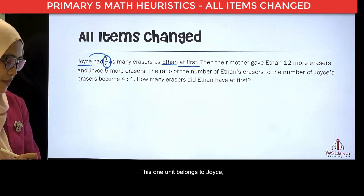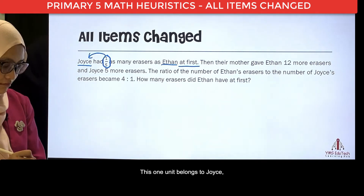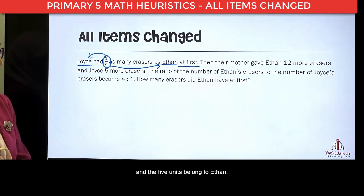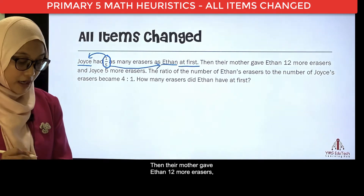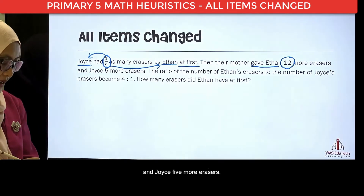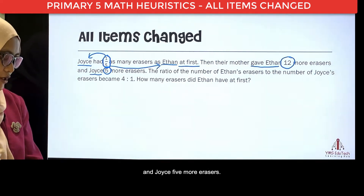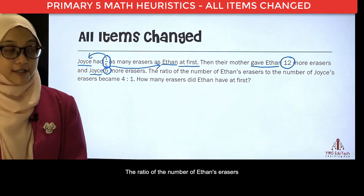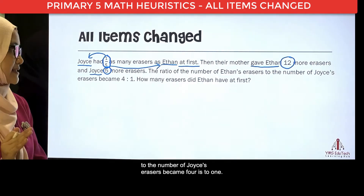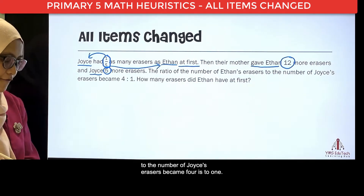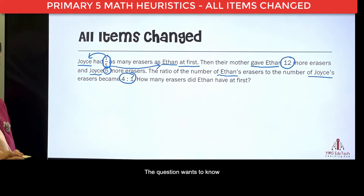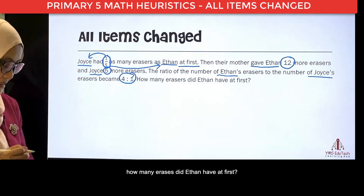So, this one unit belongs to Joyce and the five units belong to Ethan. Then, their mother gave Ethan 12 more erasers and Joyce 5 more erasers. The ratio of the number of Ethan's erasers to the number of Joyce's erasers became 4 is to 1. So, the question wants to know how many erasers did Ethan have at first.